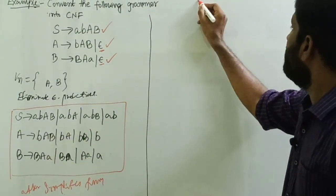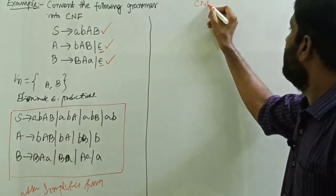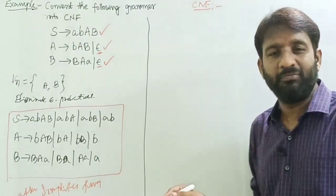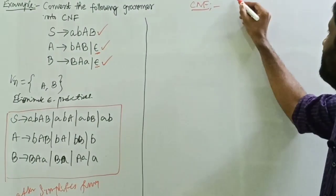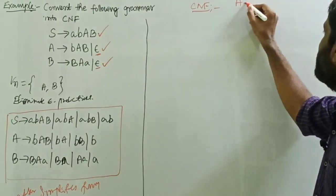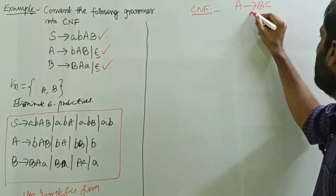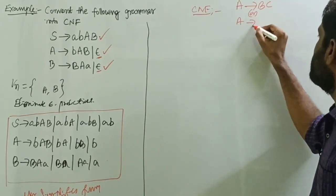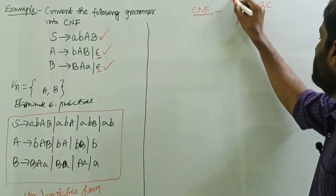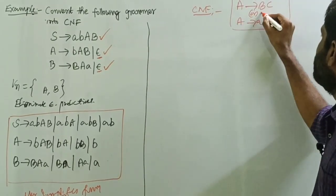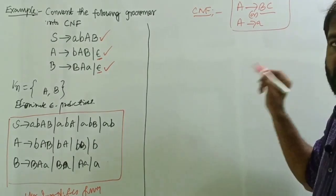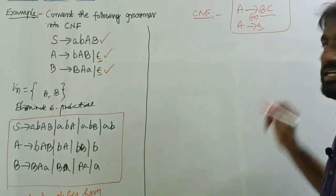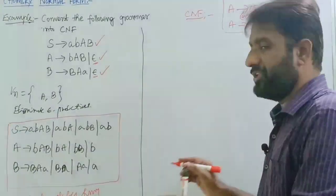Now convert this grammar into Chomsky Normal Form. The form of CNF productions is: A tends to BC, or A tends to a — that is, the right-hand side contains exactly two non-terminals or a single terminal only.